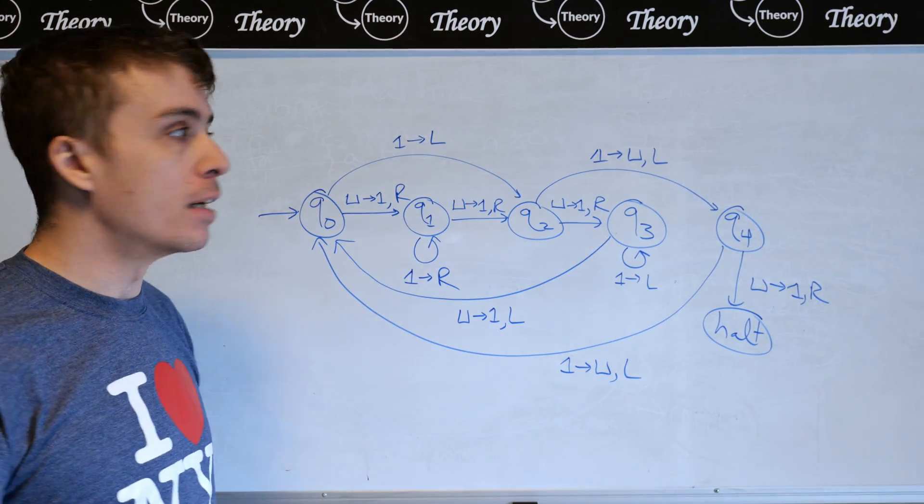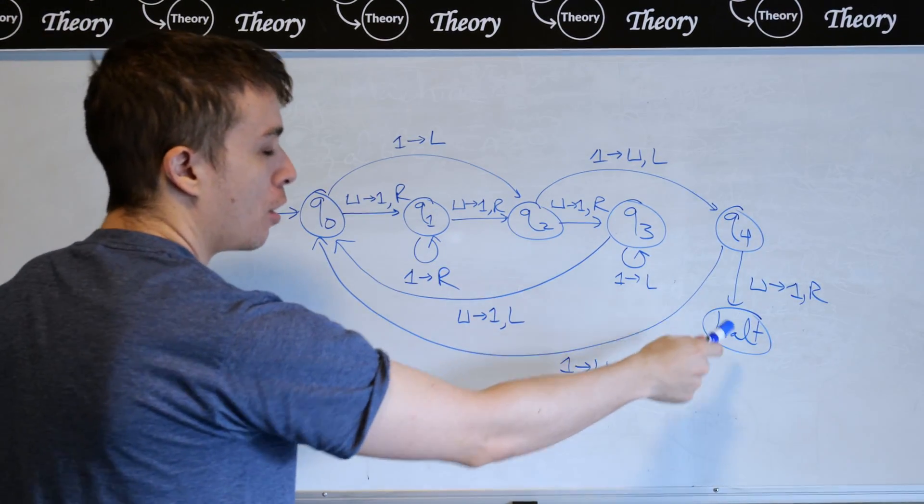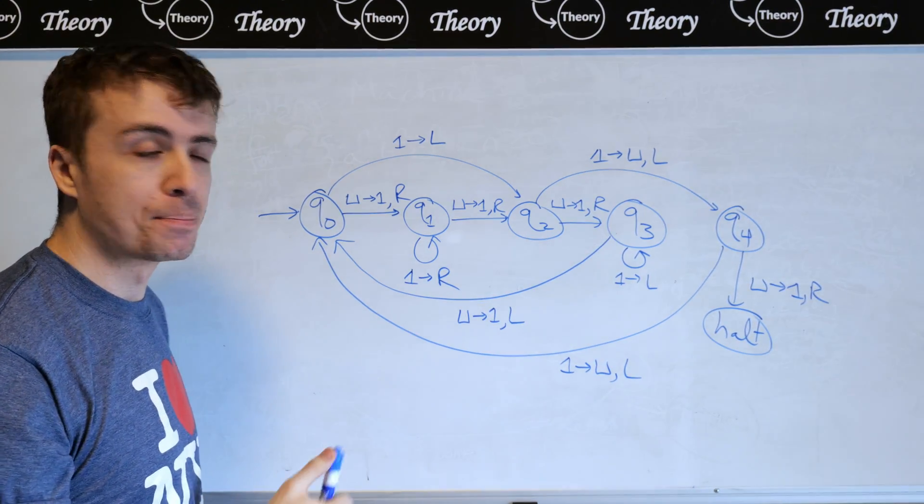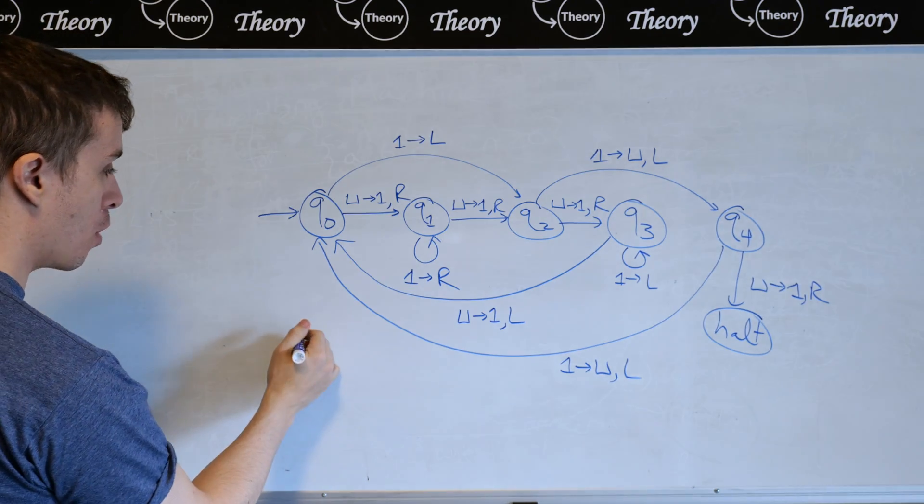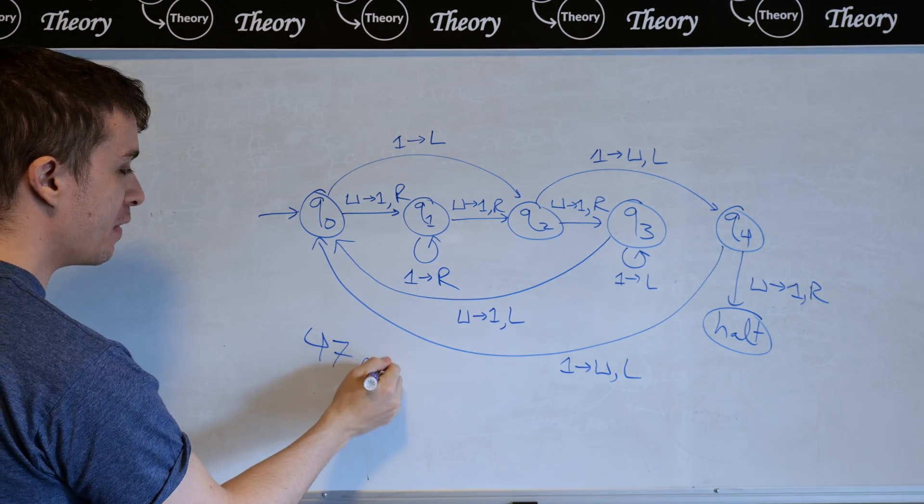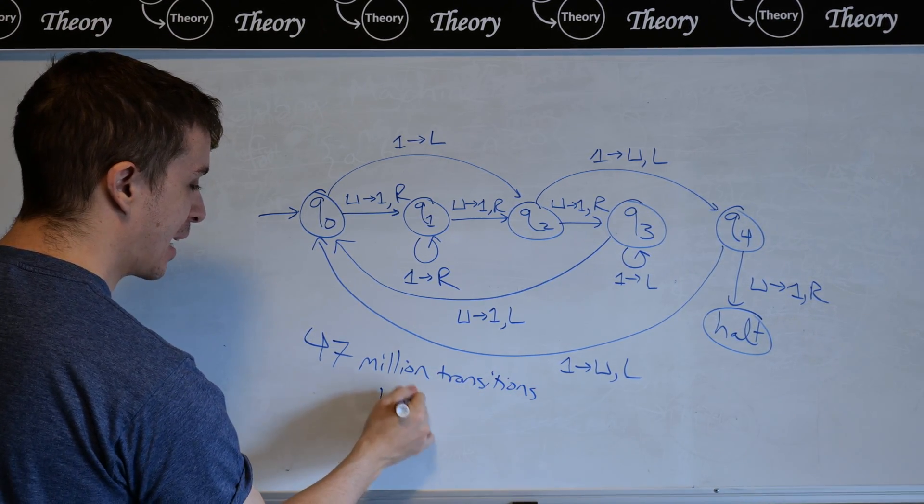I have the Turing machine right here, and it happens to have five states, Q0 through Q4, and a halt state, but we're not going to consider that. So this machine, if you run it, will run for approximately 47 million transitions if you run it with a blank tape.